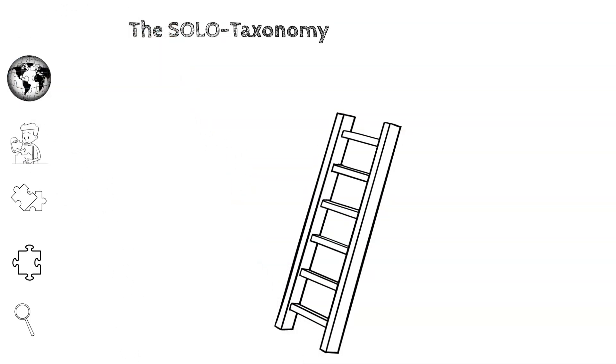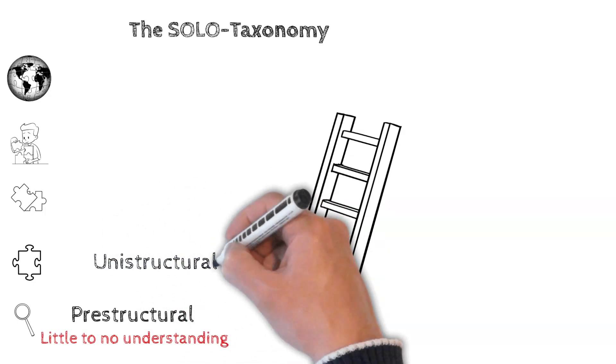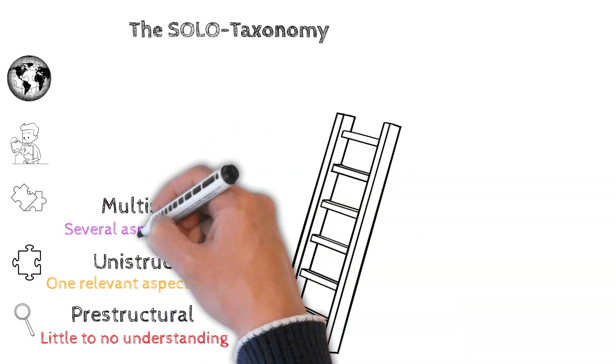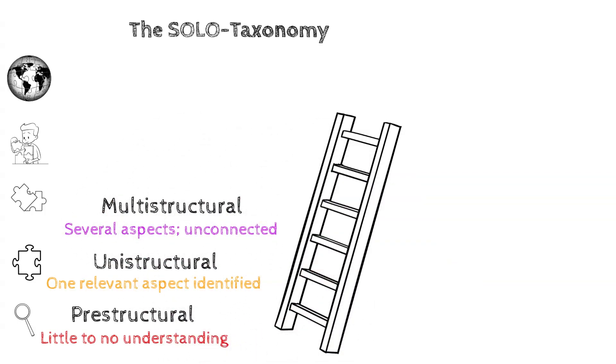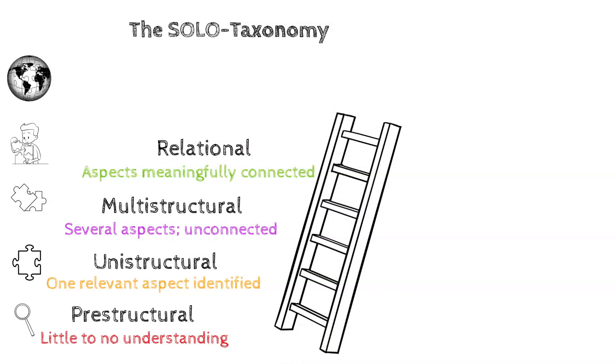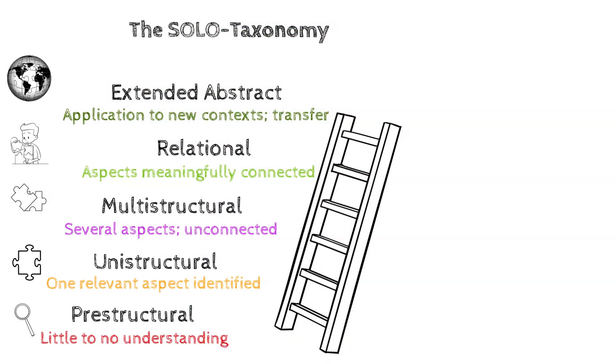The five levels build on each other logically. First, pre-structural: there is little to no understanding of the topic. Unistructural: one relevant aspect is identified. Multistructural: understanding of several aspects of the task but each aspect is represented independently. Relational: understanding of several aspects of the task and how they are related. And the highest level is Extended Abstract: understanding of the aspects can be generalized beyond the context of the question.